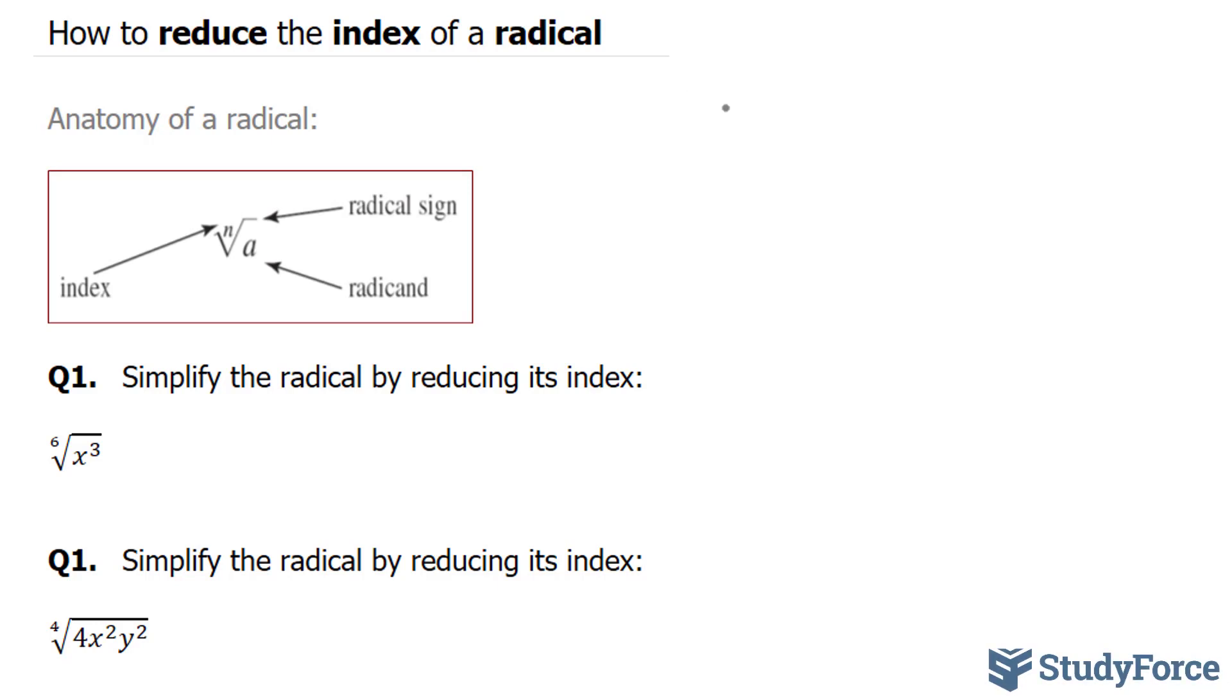Let's start with question one. In question one, we have the sixth root of x to the power of three. The best way to approach these types of problems is to convert this radical form into an expression with fractional exponents. Here's what I mean: x to the power of three to the power of one over six. This expression and this expression are mathematically the same.